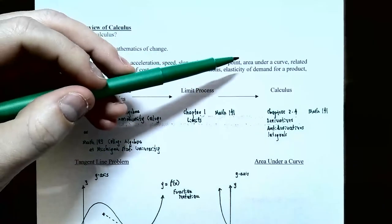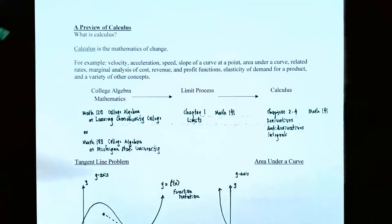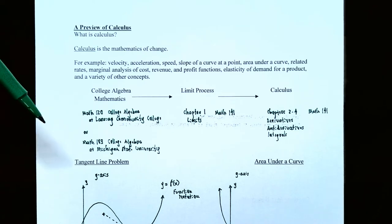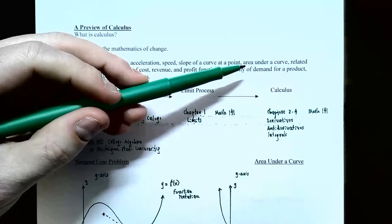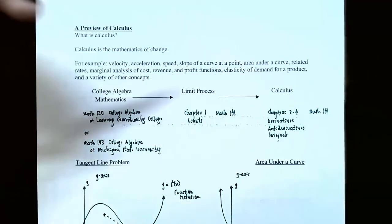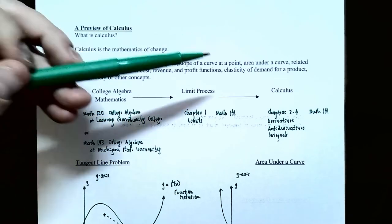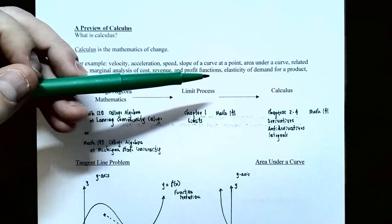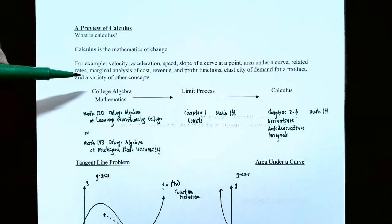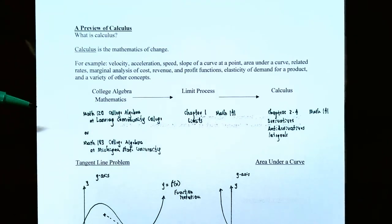We're going to talk about how to find the area under a curve. If you have a nice geometric shape like a circle, there are formulas to find its area — or a rectangle, triangle, or trapezoid. But how do you find the area under a curve when the curve is more general? Related rates, marginal analysis of cost, revenue, and profit from business and economics, elasticity of demand for a product from economics, and other concepts from physical sciences, chemistry, and biology that use calculus — those are all going to be discussed in this class.